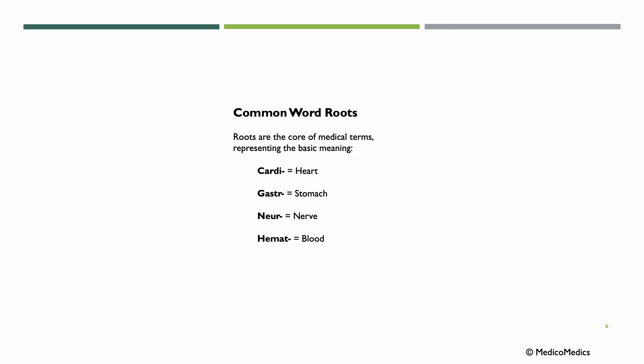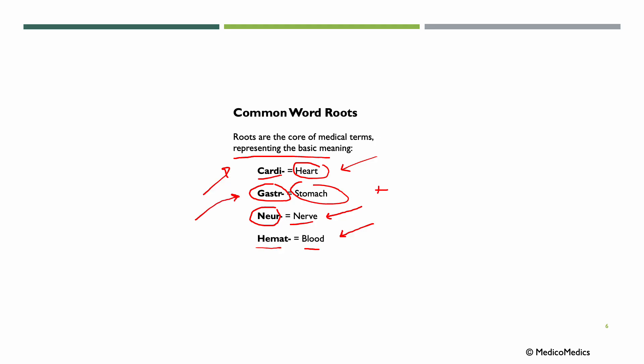Some common word roots: roots are the core of the medical term, representing the basic meaning. We have cardi, meaning heart; gaster, meaning stomach; nure, meaning nerve; and hema, meaning blood. With combining vowels and suffixes added, we can form examples like carditis — inflammation of the heart; cardiology — study of the heart; neurology — the study of nerves or the brain; hematology — study of blood. We have gastro and entero, meaning intestine, giving us gastroenterology. We could also say gastritis — inflammation of the stomach.